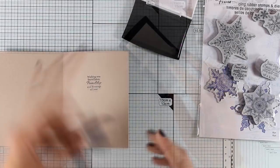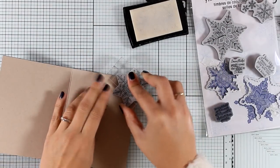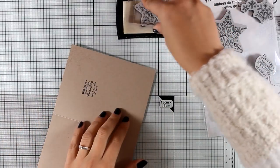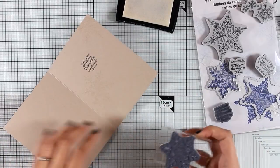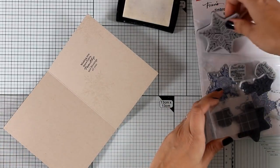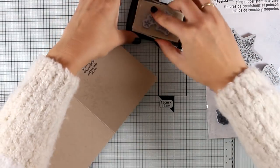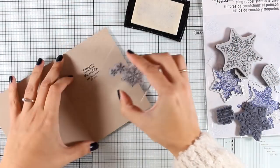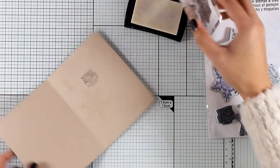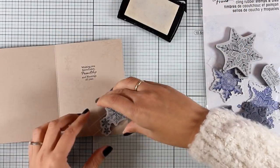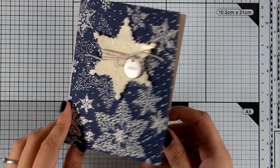And here is another thing that I like to do when my card base is not white, so in this case it's craft. I like to repeat the pattern at the front by stamping on the inside with Versamark, so this is going to create a little bit of interest on my background, but at the same time it's going to be very subtle, and I will be able to write my note with no problem. And here is the finished card.